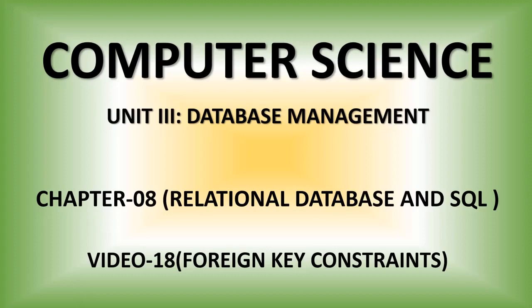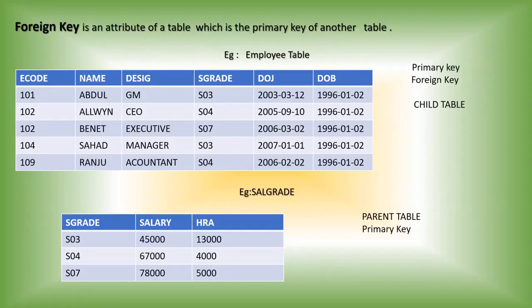Today we can study about foreign key constraint. A foreign key is an attribute of a table which is the primary key of another table. That means a foreign key will relate or link two different tables. In one table there is a foreign key, and in the other table the same thing will be the primary key. Using foreign key we can link two different tables.